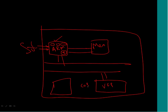We saw how a coprocessor gets interfaced with the ARM processor, what the coprocessor instructions are, and then we took an example of how a vector floating-point coprocessor is implemented as a coprocessor to the ARM core. Having seen all this, we are now going to explore a different world, which also includes the memory controller.